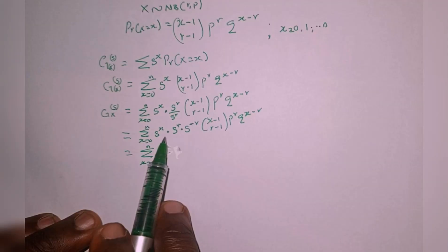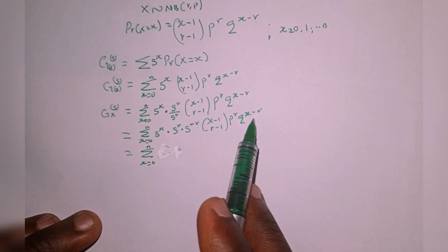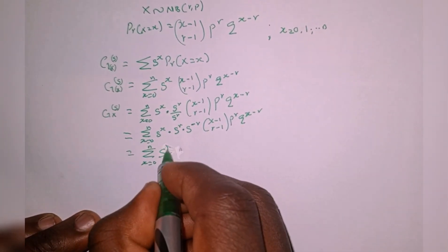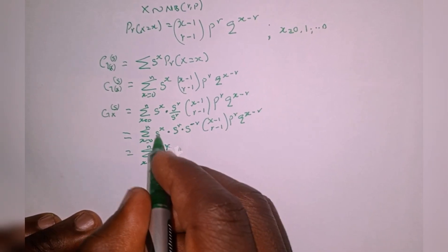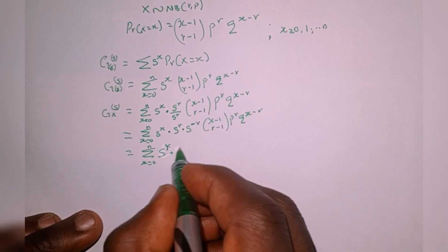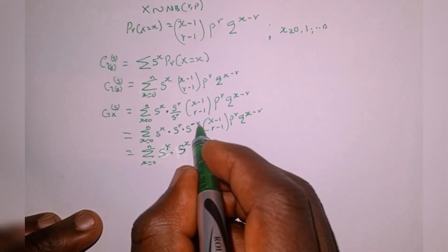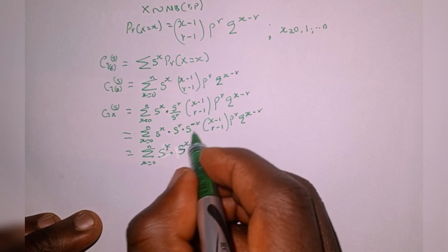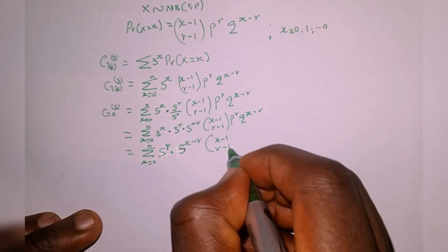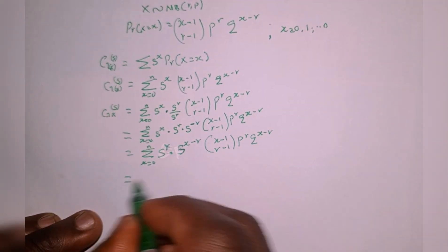Our focus here is to have a term with the power of x minus r. So for s to the power of r, we first write x to the power of r multiplied by s to the power of x, and x to the power of minus r. We multiply those together since the bases are the same: we write one base and add the two powers, so x plus minus r equals x minus r. Then multiply by x minus one combination r minus one, p raised to the power of r, q raised to the power of x minus r.